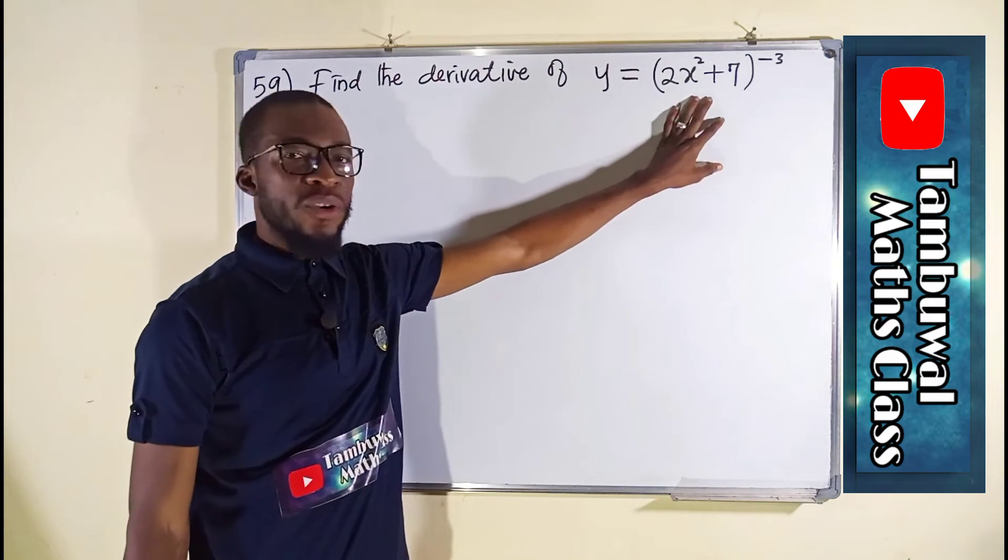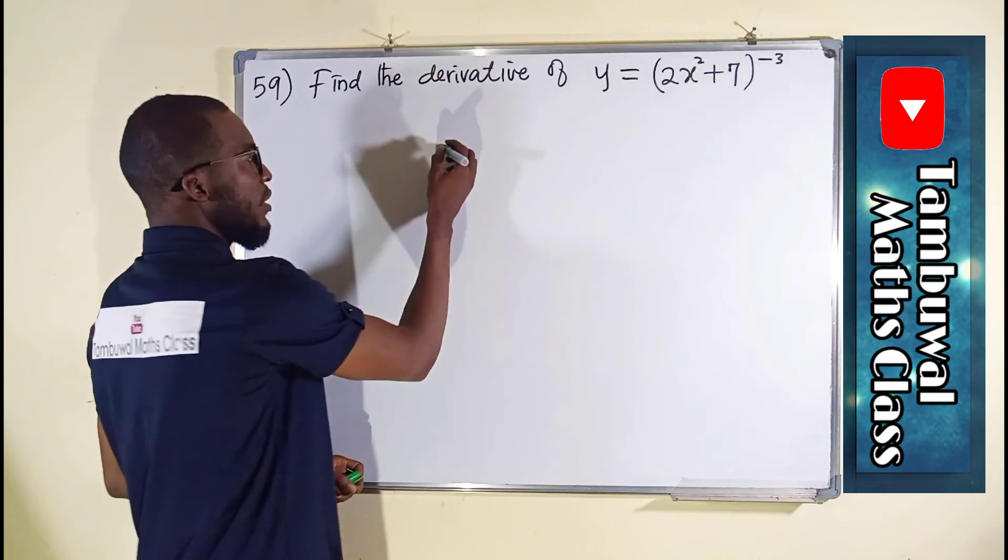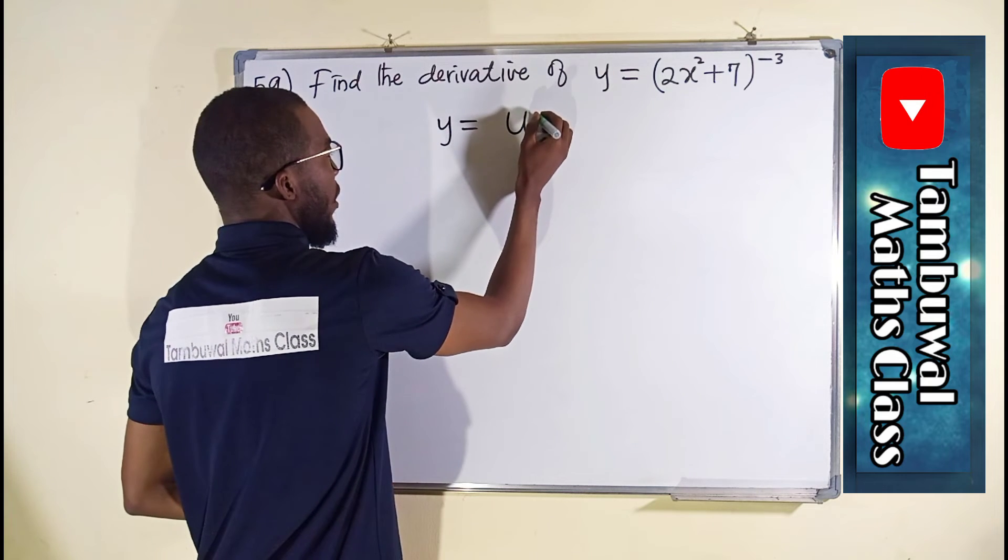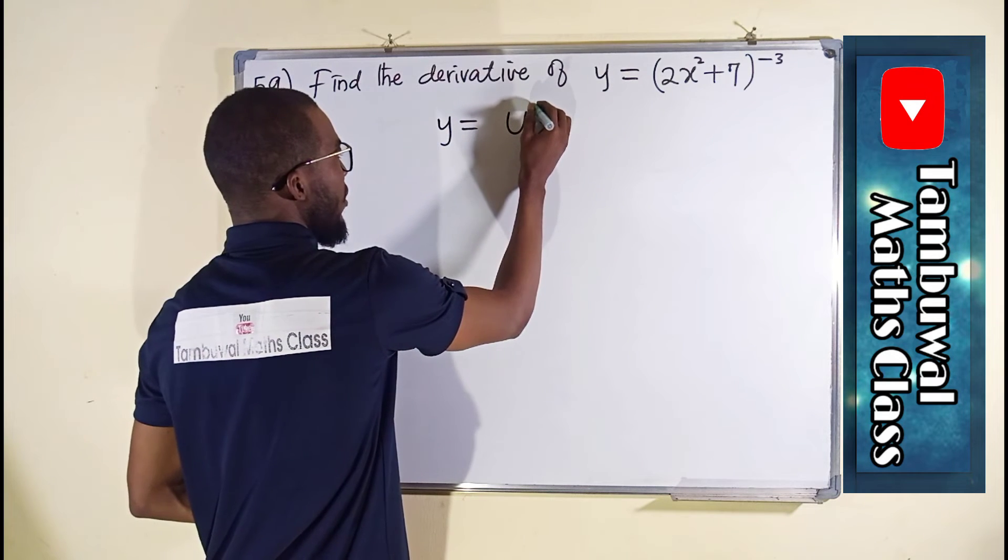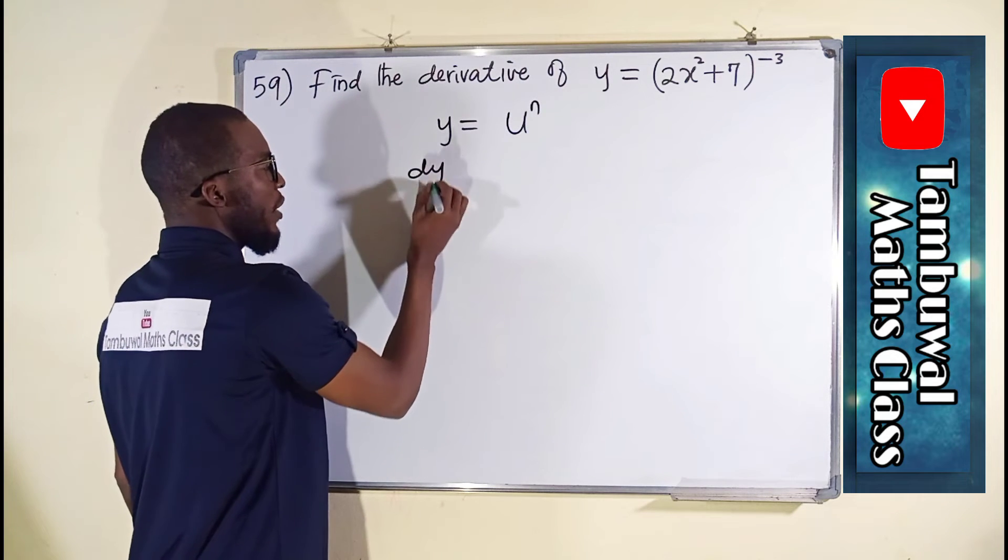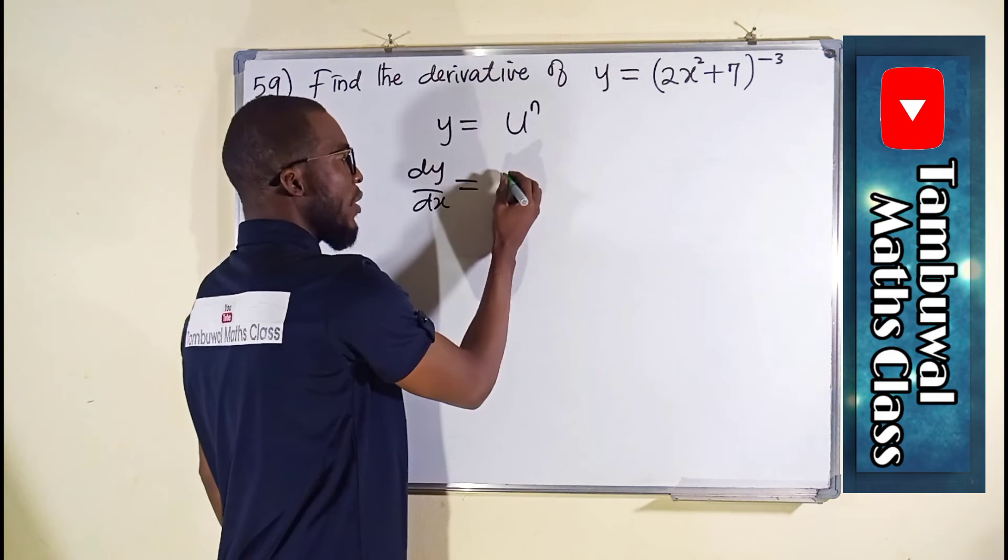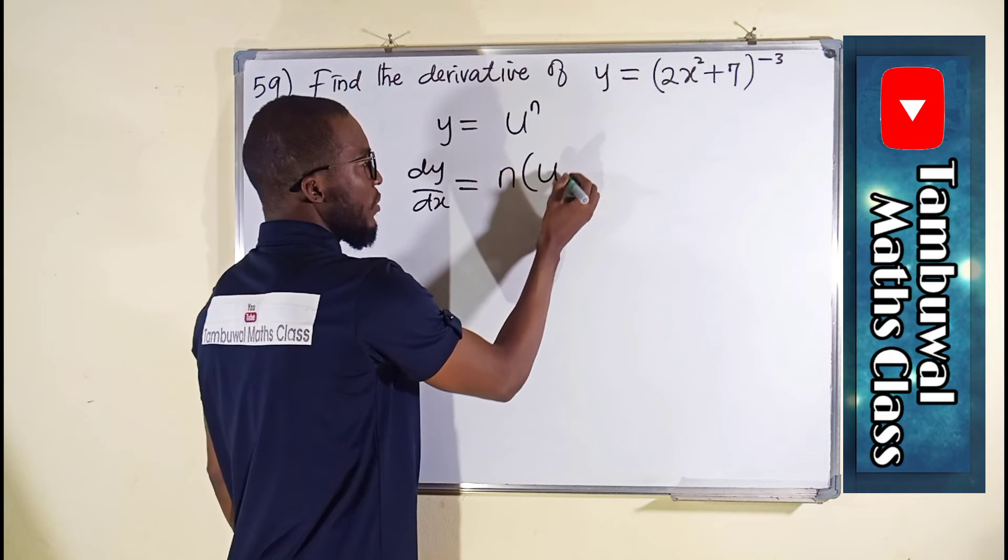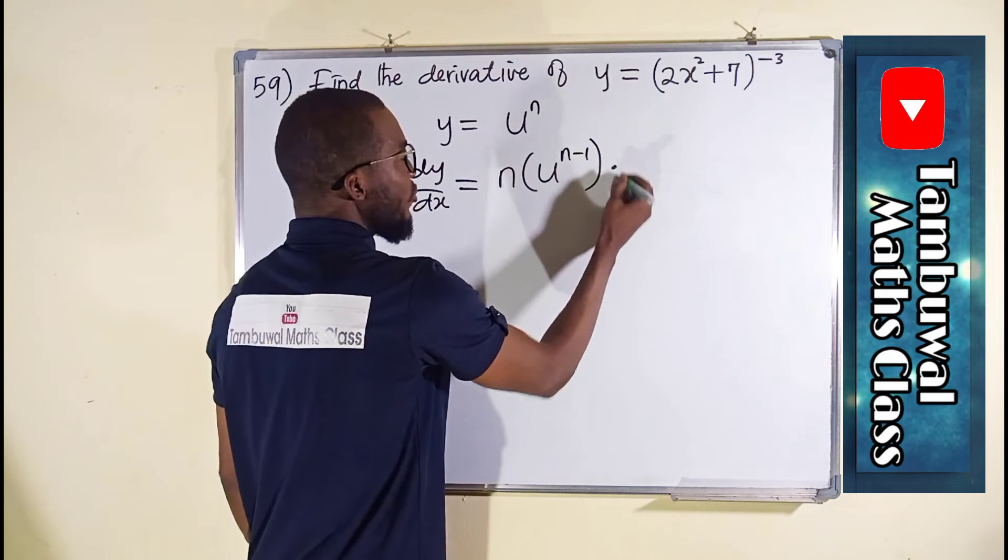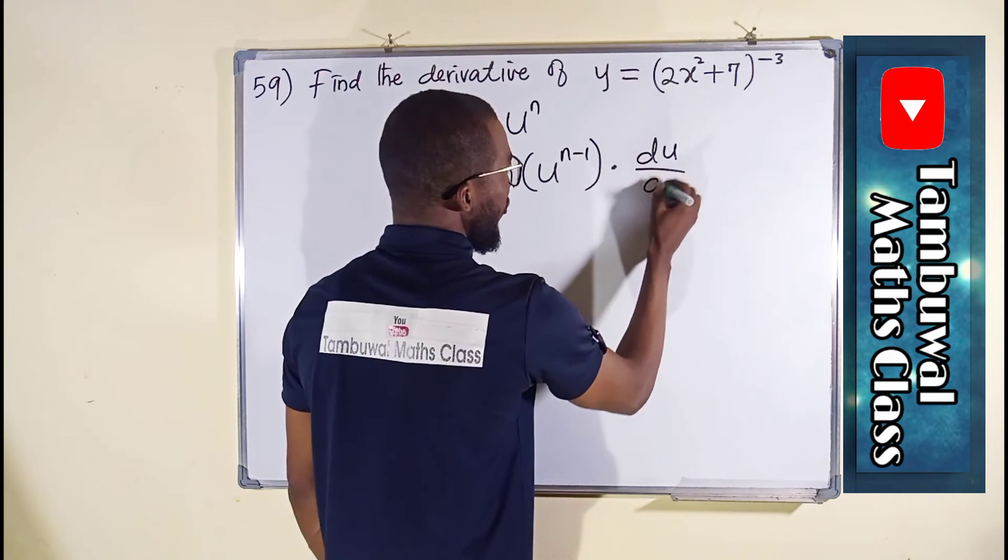This is a function of a function where we have to apply chain rule, and the general form of a chain rule says if you have y equals u to the power of maybe n, the derivative of y with respect to x will be equal to this power drop down, n, then this u will be raised to the power of n minus 1, and you have to multiply by the derivative of u with respect to x.